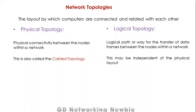There are two views of network topologies. One is called physical topology and the second one is called logical topology. In physical topology, we are concerned with the physical connectivity between the nodes — how the nodes are connected with each other within a network. Physical topology is also known as cable topology, referring to how they are cabled together.